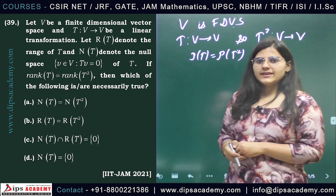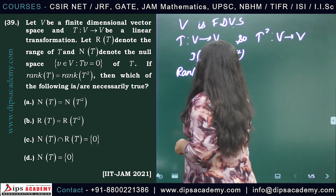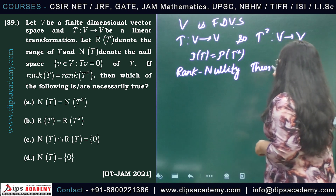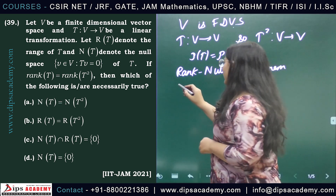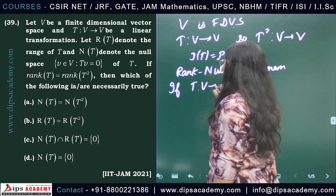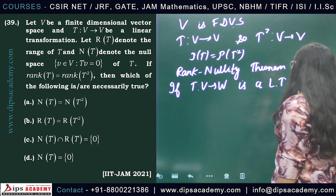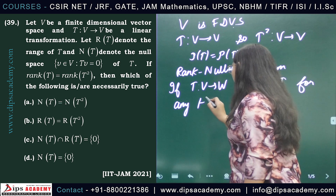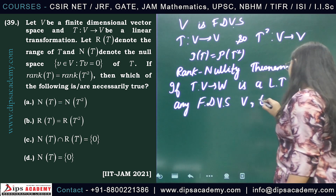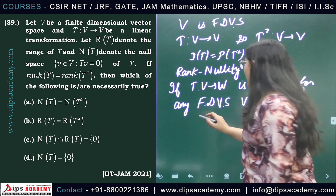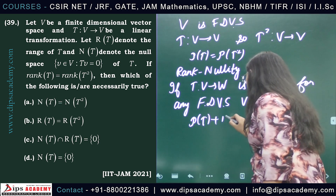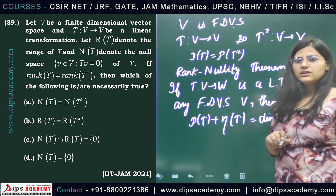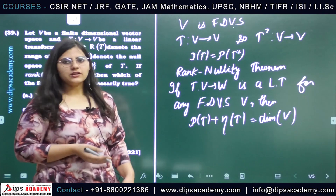Now we have a well-known result in linear algebra which is the rank-nullity theorem, which states that for any finite dimensional vector space V, if T from V to V is a linear transformation, then the rank of T plus the nullity of T equals the dimension of the vector space V. We are going to use this result to solve this question.